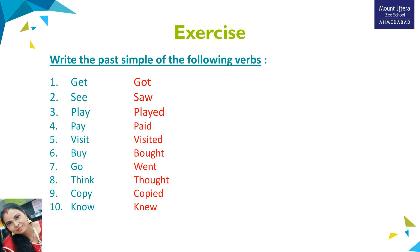Number four: 'pay' — answer is 'paid.' Number five: 'visit' — answer is 'visited.' Number six: 'buy' — past form is 'bought.' Number seven: 'go' — answer is 'went.' Number eight: 'think' — past form is 'thought.' Number nine: 'copy' — answer is 'copied.' Number ten: 'know' — the past form is 'knew.'